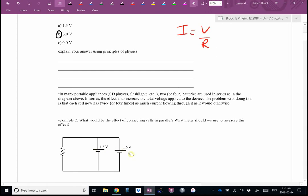What would be the effect, do you think, of connecting the cells in parallel? In other words, how many volts do you think are going through this resistor? Katie? You said the answer. Yeah, loud and proud. 1.5 volts.